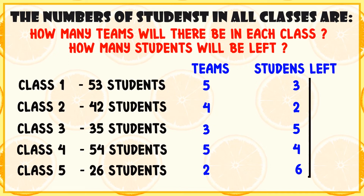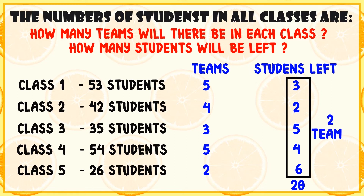So how many students are left in all? Answer: 20 students are left in all. How many more teams can be made with all these students left? Answer: 2 more teams can be made with all these students left.